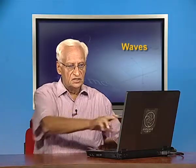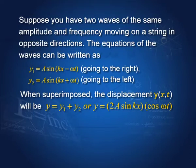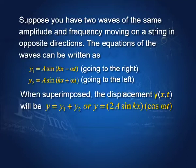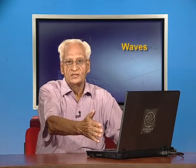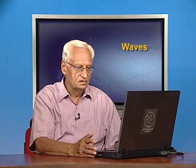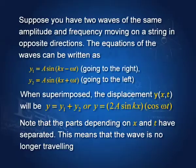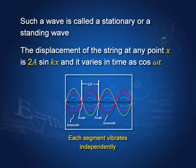This result is very important. The time part has been separated from the x part — 2A sin(kx) becomes the amplitude of an oscillation, and cos(ωt) is the oscillating part. The x and t dependence have separated, which means the wave is no longer travelling. A travelling wave has kx − ωt combined, but here the two are separate. These waves are called stationary or standing waves.